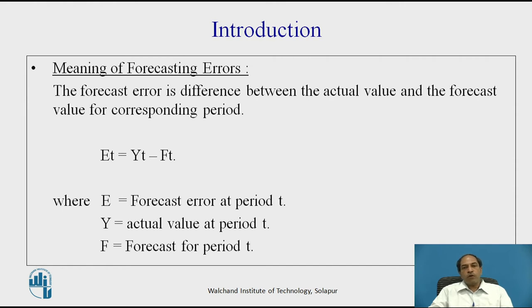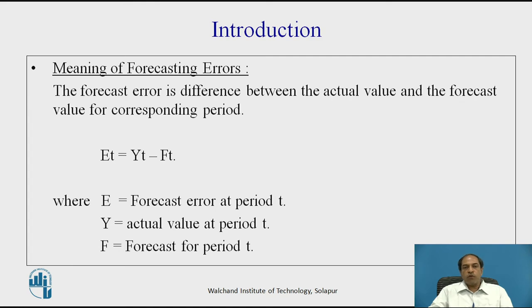Sometimes if the product is not continued in the next quarter, there are chances of obsolescence and damage to the product. The basic purpose is to minimize the gap between the actual and the forecasted values. The difference between the forecasted and actual value is called the error. In terms of an equation: et = yt − ft, where e is the forecasting error at period t, y is the actual value at period t, and f is the forecast for period t.